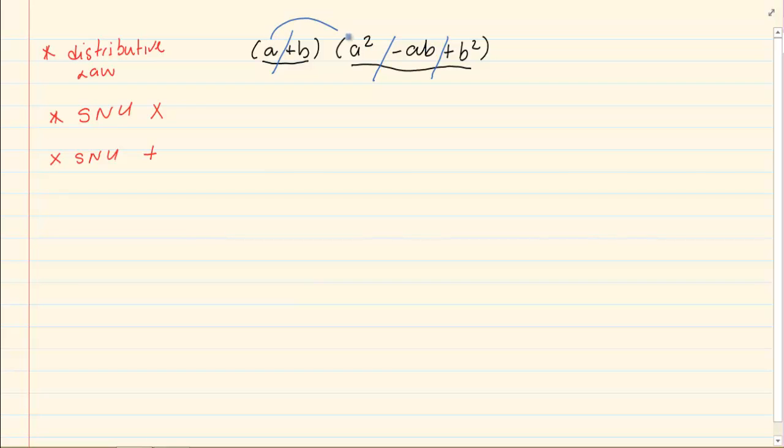A times a squared, which is equal to a cubed. Then we have got a times negative ab, which will equal to negative a squared b. Remember at all times we are using signs, numbers and unknowns multiplication. Then we have got a times b squared, which will be positive ab squared. Now we have distributed the a to every term in the second bracket.